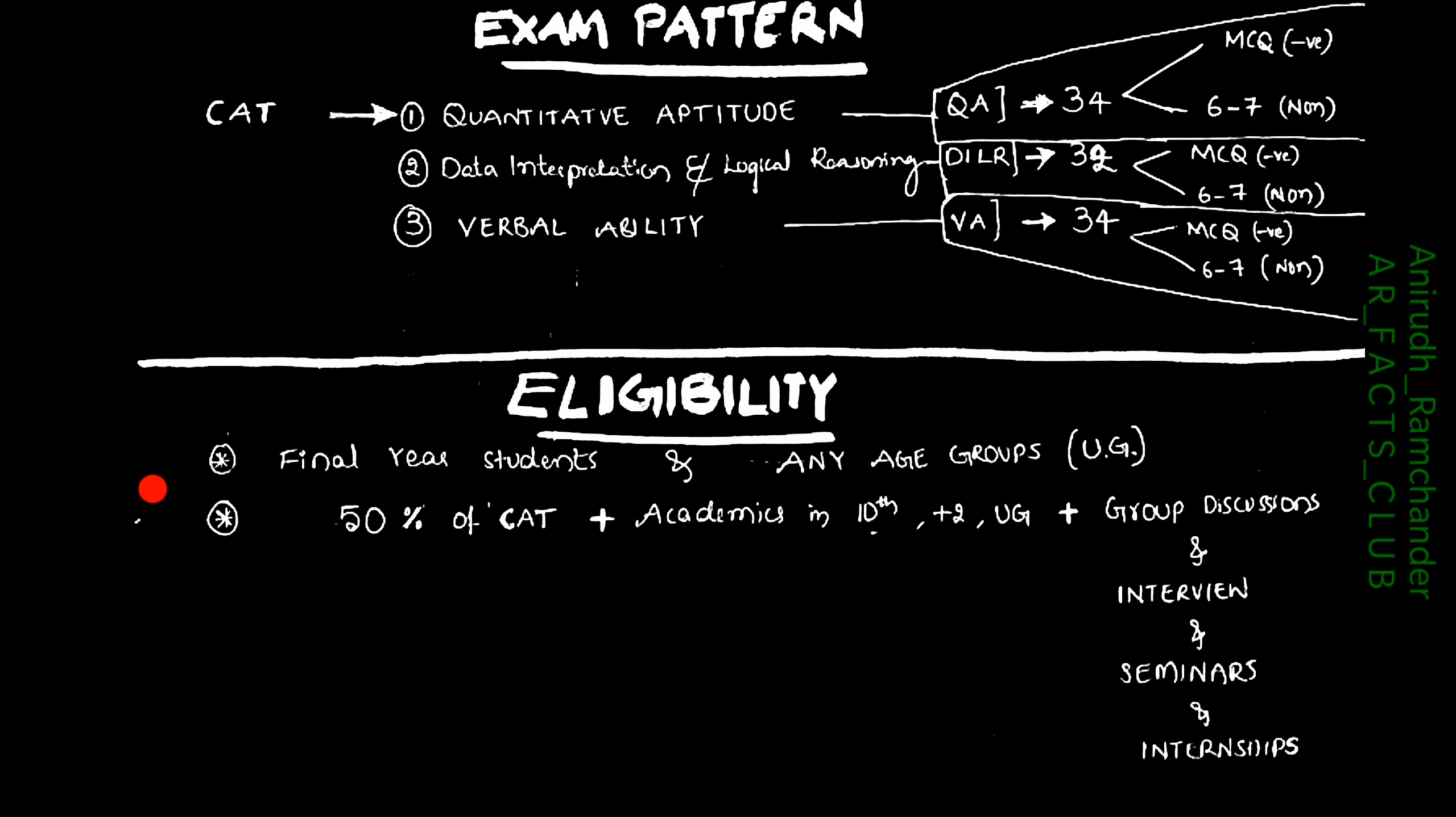Coming to eligibility, all final year students and any aged groups who completed UGC are eligible for CAT. While the admission process, 50% of your CAT score is taken into consideration plus academics in 10th, plus 2, and UGC graduation courses, plus group discussions, interviews, seminars, and internships—all are considered to give you admission in particular colleges.